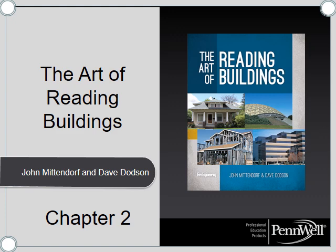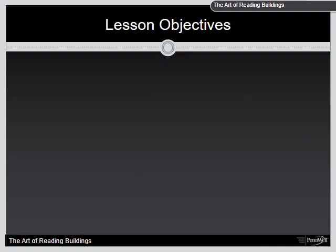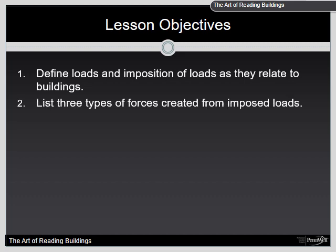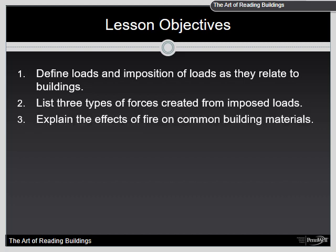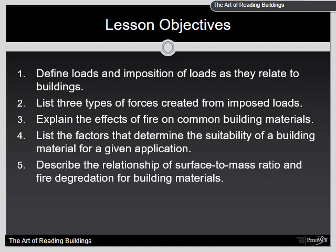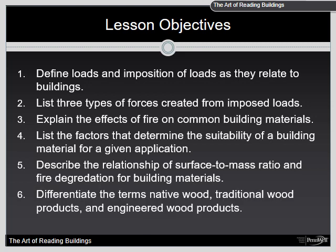Chapter 2: The Art of Reading Buildings. In this chapter, we're going to look at defining loads and imposition of loads as they relate to buildings. We'll list the three types of forces created from imposed loads, explain the effects of fire on common building materials, list factors that determine suitability of a building material, describe the relationship of surface-to-mass ratios and fire degradation, and differentiate native wood, traditional wood products, and engineered wood products.